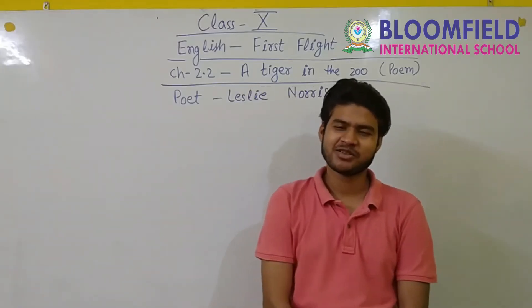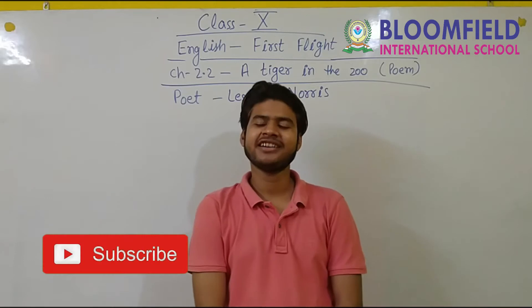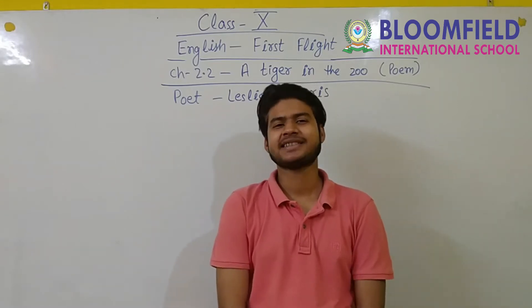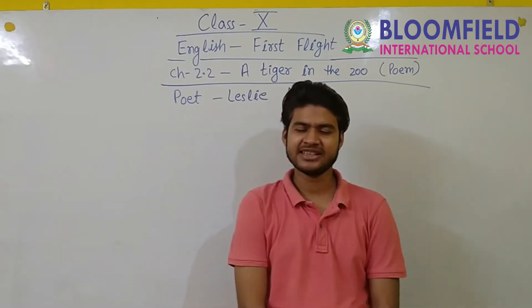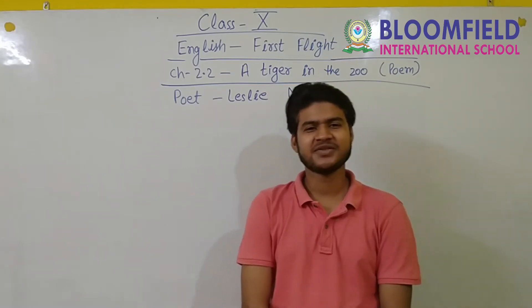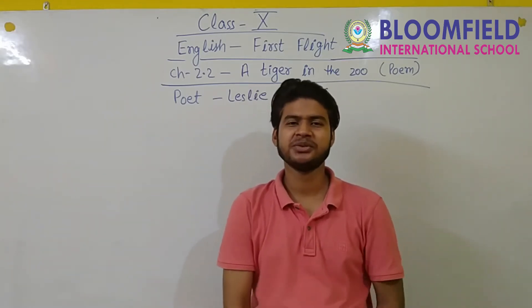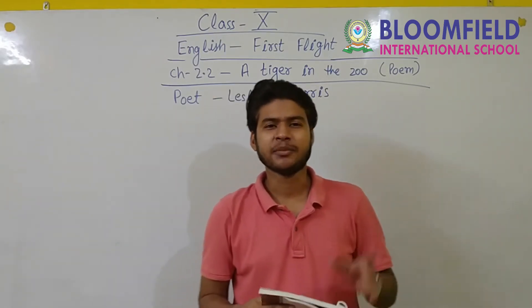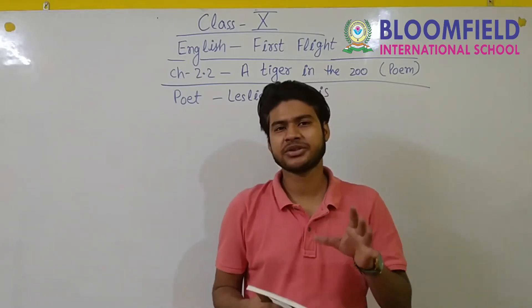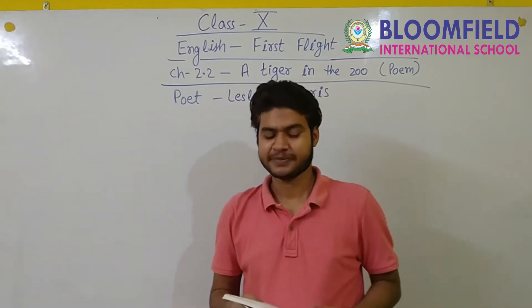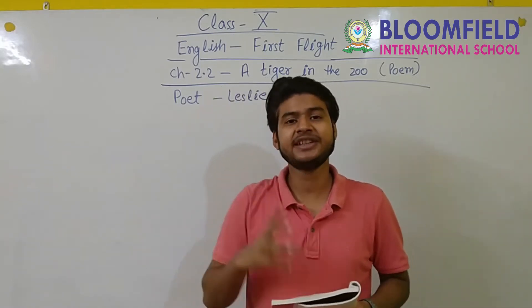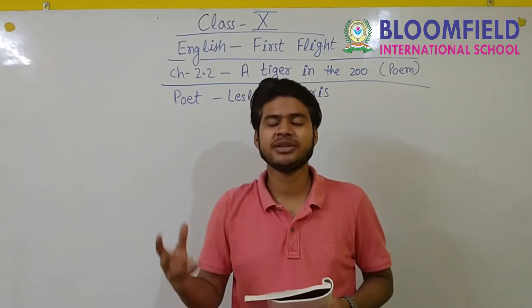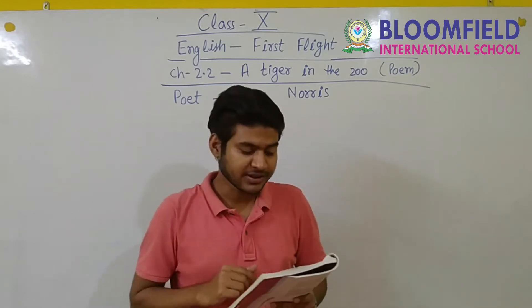Hello students, welcome back to our channel. Here we are again with a new video. Today we are going to study English of class 10th, the book is First Flight, and the chapter we are going to study is chapter 2.2 - 'A Tiger in the Zoo.' This is a poem and the poet who wrote this poem is Leslie Norris. Before we get started and before we read the poem, we will understand what this poem is all about - that means we should have the themes of this poem.